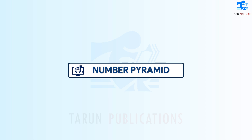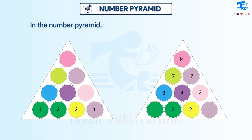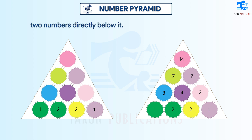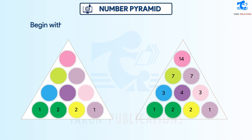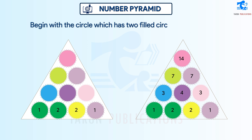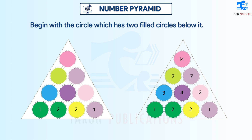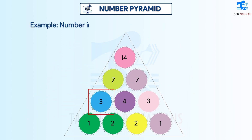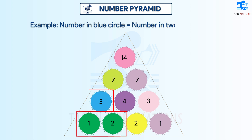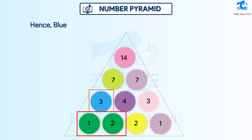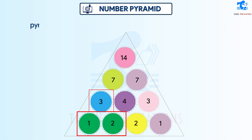Number Pyramid. In the number pyramid, each number is a summation of two numbers directly below it. Begin with a circle which has to fill circles below it. For example, the number in the blue circle is equal to the numbers in the green circles. Hence, blue is equal to 1 plus 2, which is equal to 3. The same method is followed to find all the numbers in the pyramid.